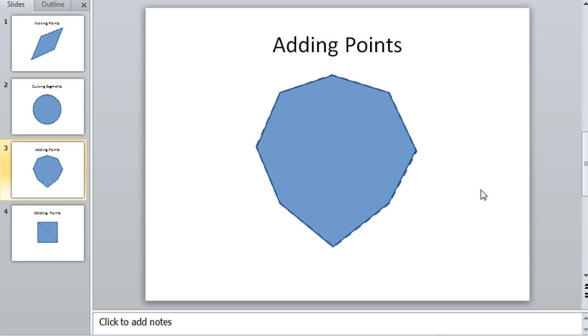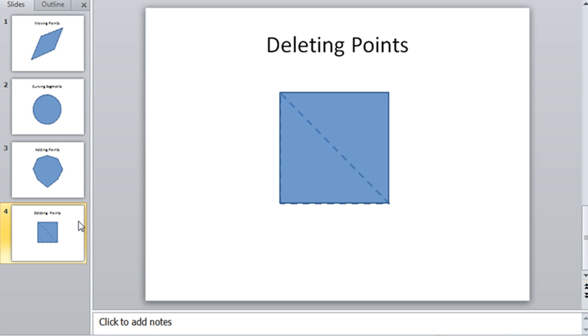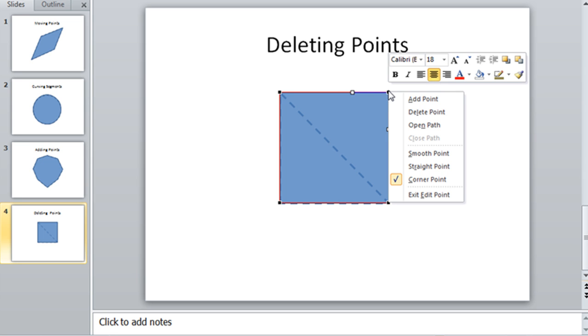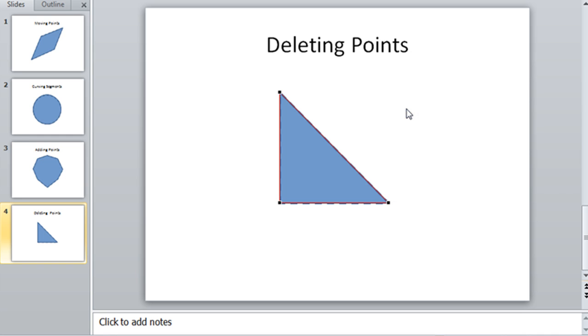In addition to adding points, you can also remove them. So to make this square into a triangle, let's edit those points by deleting this point right here. Right-clicking right on top of that point and choosing the option Delete Point. That's all there is to it. Removes the point and then connects the other two remaining points, making a nice neat triangle.